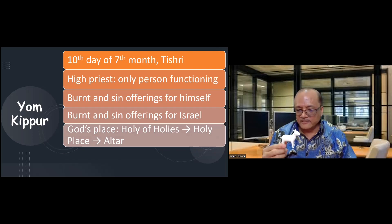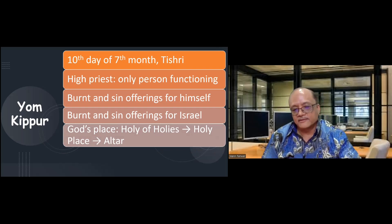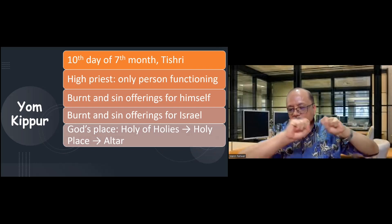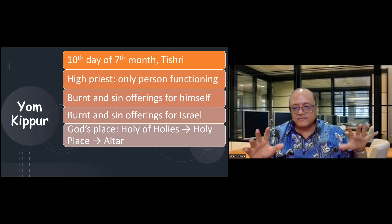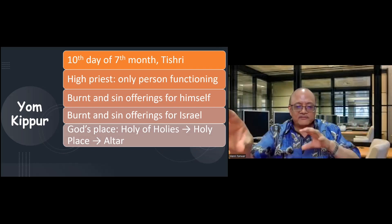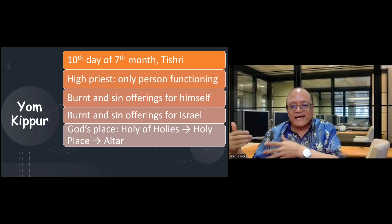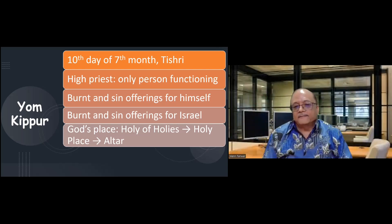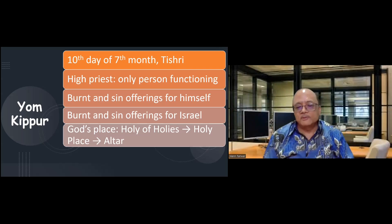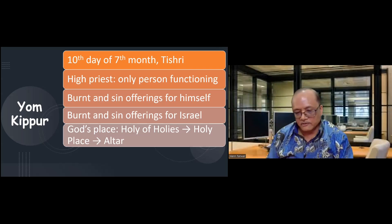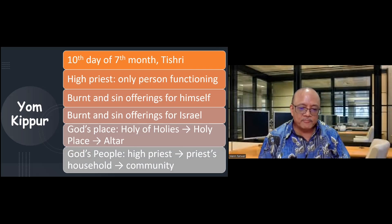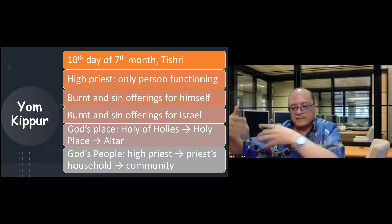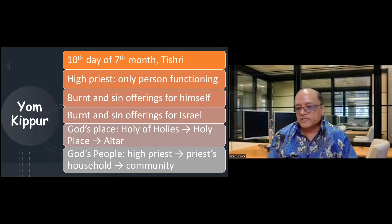There are two goats used during Yom Kippur. One becomes the cleansing agent — the blood of that goat becomes a cleansing agent. The high priest would go into the Holy of Holies, sprinkle the blood of the first goat seven times, and walk backwards. Each step he sprinkles on every piece of furniture all the way out until he reaches the outside entrance and then sprinkles the blood on the people — the Holy of Holies, the holy place, the altar, and the camp. The cleansing begins with the high priest himself, then his family, then ultimately the entire community.